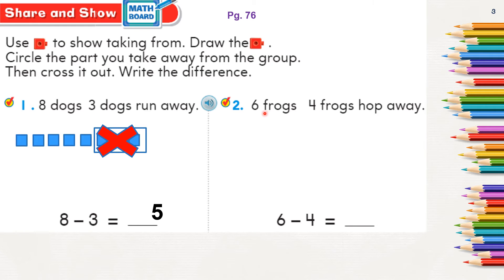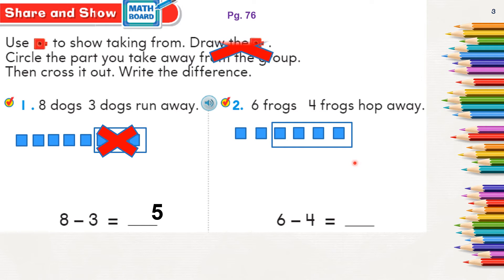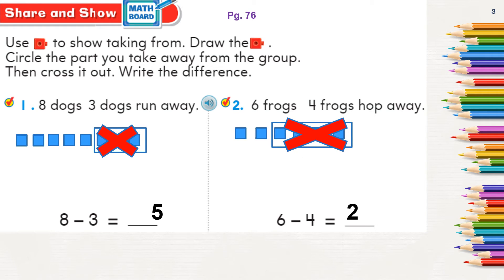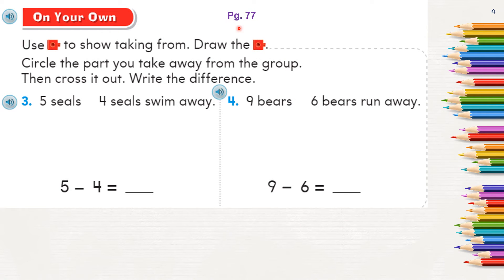Next, six frogs, four frogs hop away. Draw six cubes representing six frogs: one, two, three, four, five, six. Four frogs hop away, so put four in a block and cross them out. Count how many frogs are remaining: one, two — just two frogs are remaining. Complete the subtraction sentence: six minus four equals two.